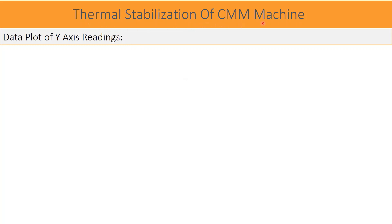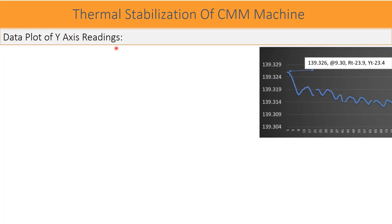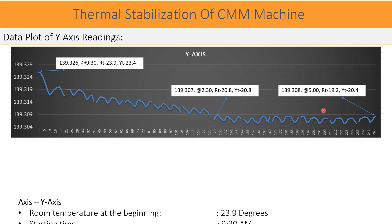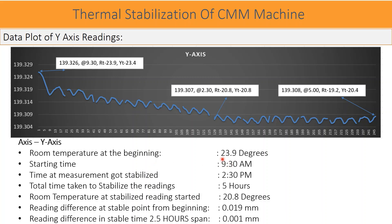The experiment output and analysis: the experiment was conducted on all X, Y, and Z axes. For the purpose of understanding, only Y-axis data is shown here, since the Y-axis — built into the granite plate — takes the longest time for thermal stabilization. The trend of measurement as output is shown in the graph. The room temperature at the beginning was 23.9 degrees. Measurement started at 9:30 in the morning, and the time at which measurement stabilized was 2:30 PM — a total stabilization time of 5 hours.